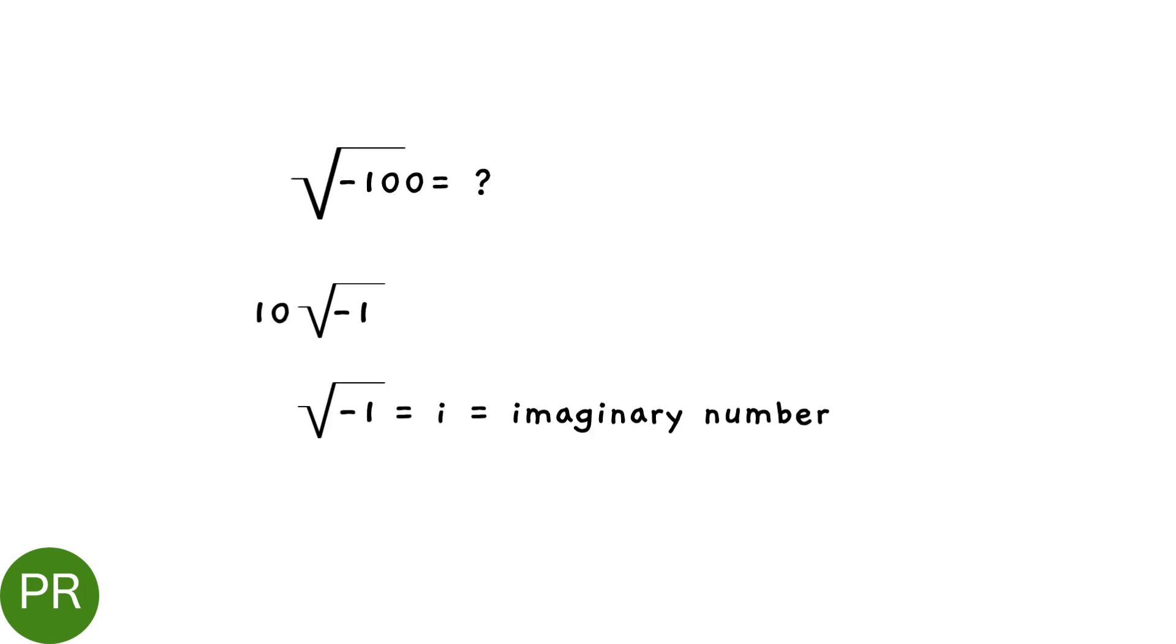How do we take a square root of minus 100, or any negative number for that matter? Now in case of 100, we can play a small trick. If we multiply it by -1, which doesn't change anything. In that case, the 10 can come out and minus 1 remains under the square root.